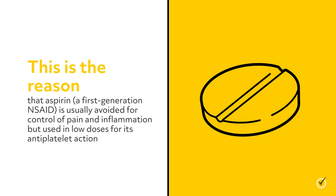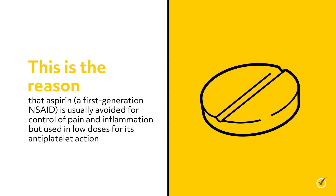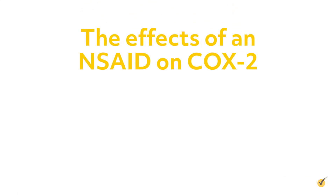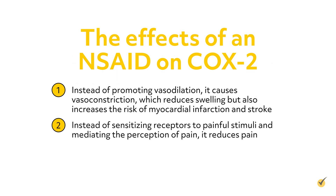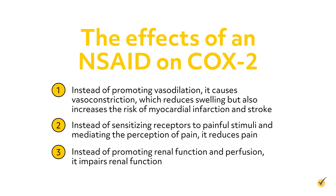This is the reason that aspirin, a first-generation NSAID, is usually avoided for control of pain and inflammation, but used in low doses for its antiplatelet action. Now let's take a look at the effects of an NSAID on COX-2. Instead of promoting vasodilation, it causes vasoconstriction, which reduces swelling but also increases the risk of myocardial infarction and stroke. Instead of sensitizing receptors to painful stimuli and mediating the perception of pain, it reduces pain. Instead of promoting renal function and perfusion, it impairs renal function.